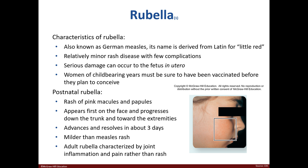Rubella, also known as German measles, causes a minor rash or can severely damage the fetus during a pregnancy. Women who plan on or have a chance of getting pregnant should be vaccinated. Postnatal rubella has a rash that starts off in the face and then works its way down, typically resolving in a few days. Adults may have joint pain instead of a rash.